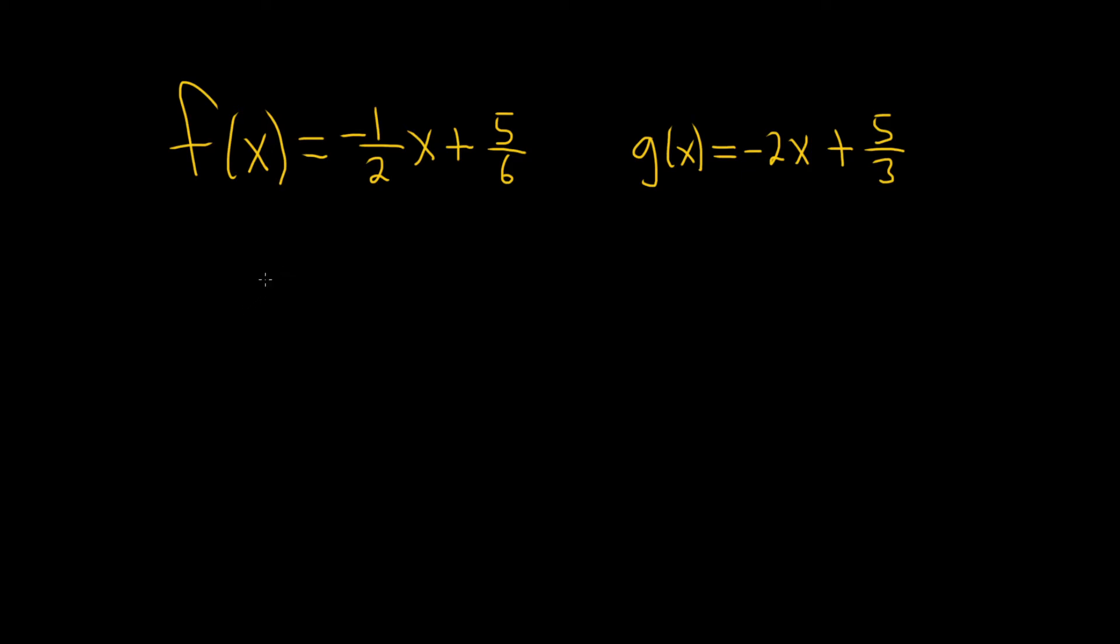In this problem, we're being asked to verify that these two functions are actually inverse functions. So what that means is that we have to check two conditions. We have to check that f°g of x is actually equal to x, and we have to check that g°f of x is also equal to x. So we have to check that we get x in both cases. So all we have to do is basically just go through the computation and make sure we get x as the answer both times.